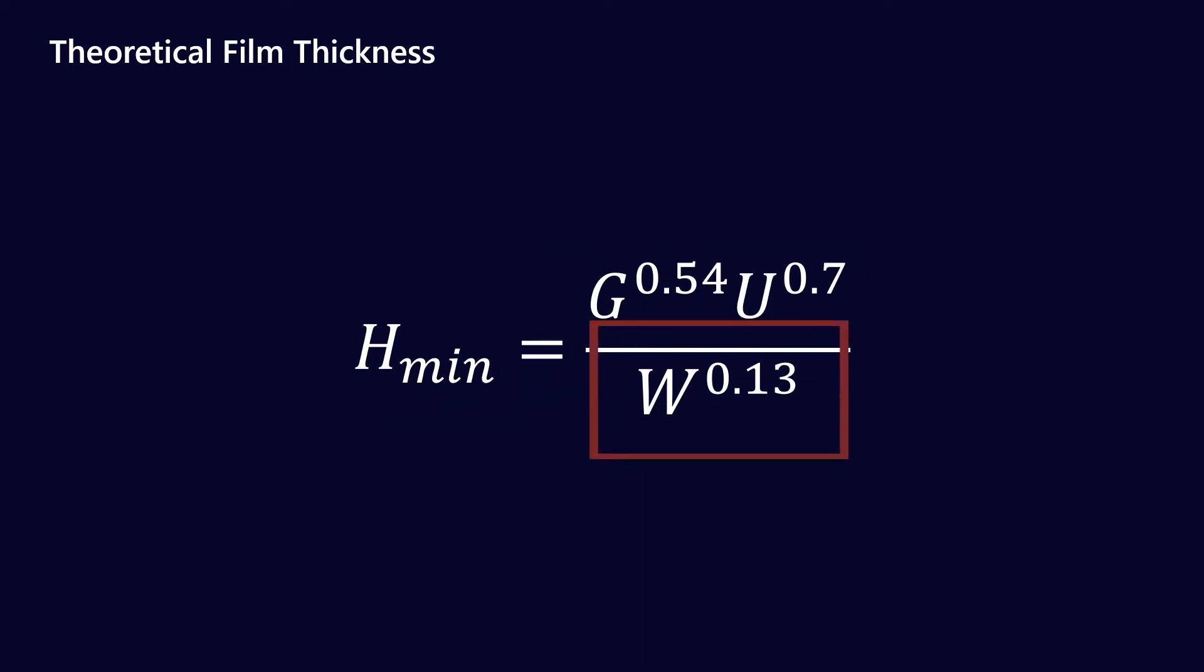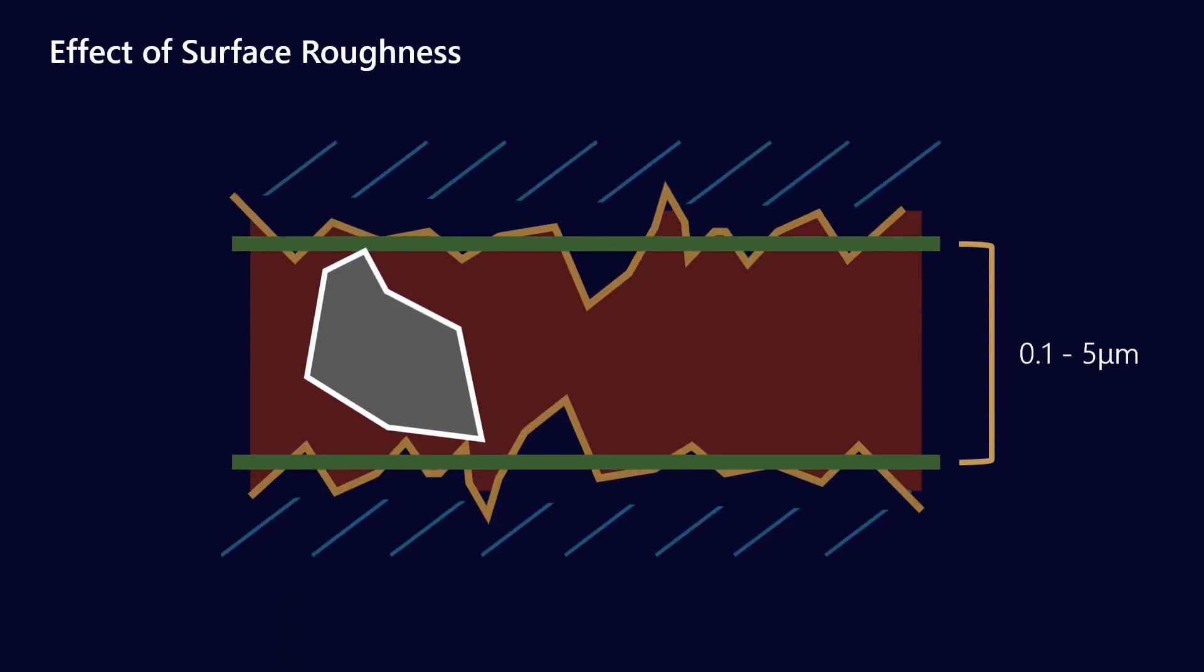And the fact of the matter is that for most of us on the application side, we don't actually need to know this equation. This is very much for the PhD boffins who really want to calculate this to the nth degree. What we really need to know is simply 0.1 to 5 microns is the range that we need to be looking at.